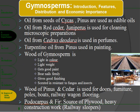For oil and wood: oil from seeds of Cycas macronesica is used as edible oil. Oil from red cedar and juniper is used for cleaning and microscopic preparation. Oil from cedar and teotara is used in perfumes, as they are fragrant. Turpentine oil is used for painting and medicine.